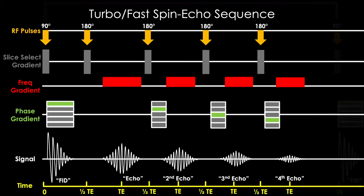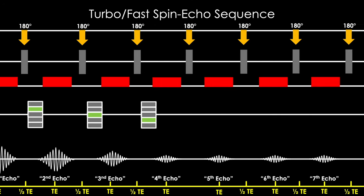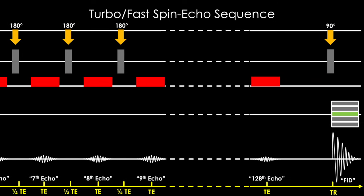What if we keep these echoes going? If we somehow prevent them from dying out and produce echo after echo until we get over 128 echoes, or even 256 echoes in a row, then we wouldn't even need to repeat this cycle.